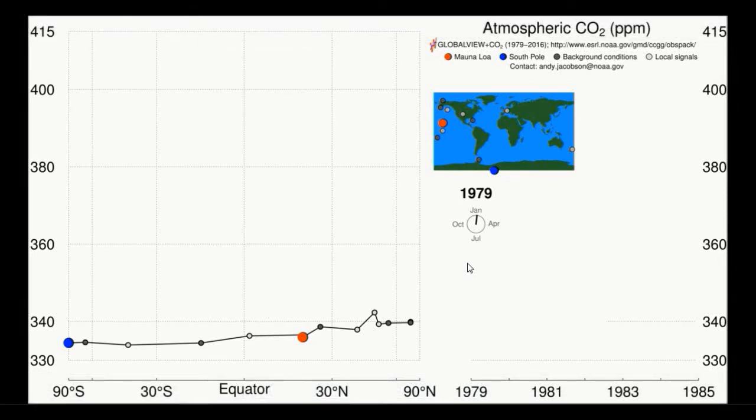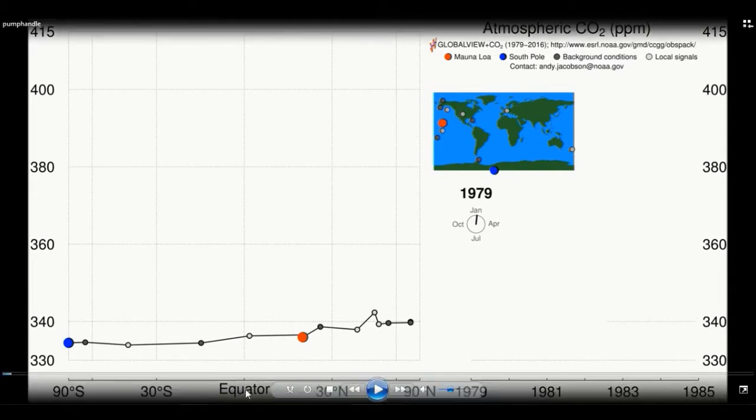First of all, this is an animation of changes in carbon dioxide concentrations over time. Here is the equator, and here is the south pole and the north pole. Along this line are different locations on the Earth's surface.